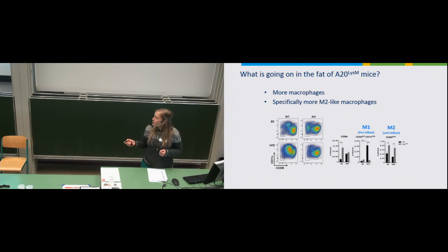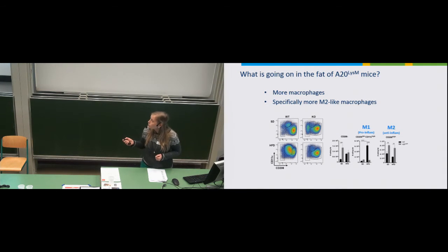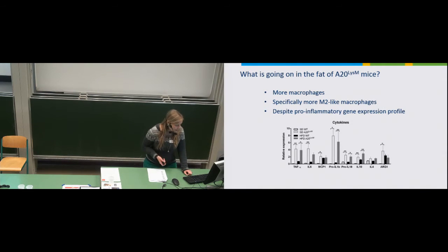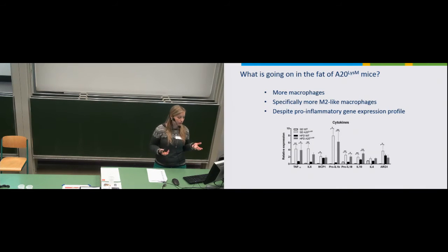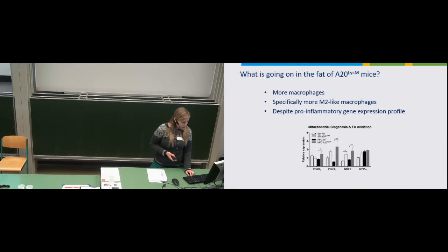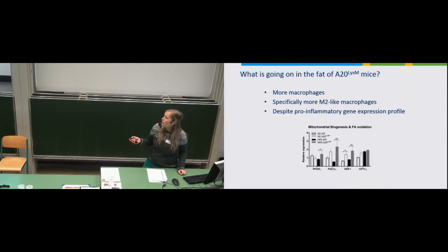The M1-like macrophages and the M2-like macrophages show distinct patterns. In standard diet wild-type you have a lot of M2-like macrophages. In high-fat diet wild-type it shifts to more M1-like macrophages. In the knockout situation you have a lot of M2-like macrophages. However, when you look at their expression profile, they seem to still have a very pro-inflammatory cytokine expression profile — all these cytokines are NF-kappa-B driven and are still highly upregulated. It seems like they have both characteristics of M1 and M2-like macrophages.